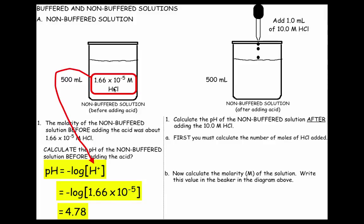We're now going to add 1 milliliter of a 10 molar HCl solution to this 500 milliliters of this non-buffered solution. First of all, calculate the pH after adding the acid. First, you must calculate the number of moles of HCl added. To do that, we added 1 milliliter. Now you can either do this in your head, move the decimal over 3, or I'll just show the calculation.